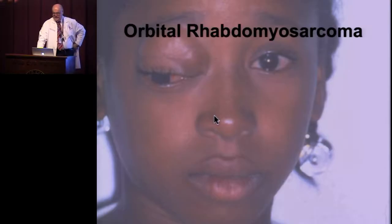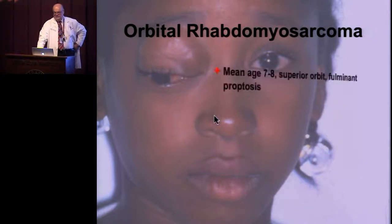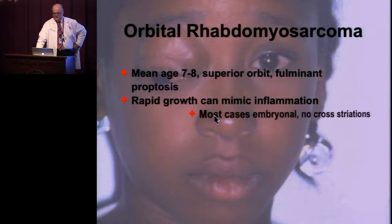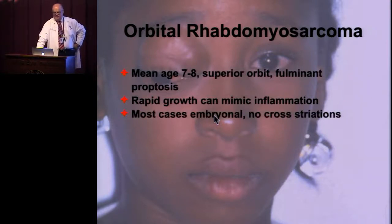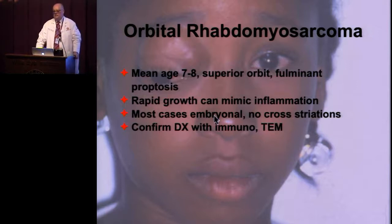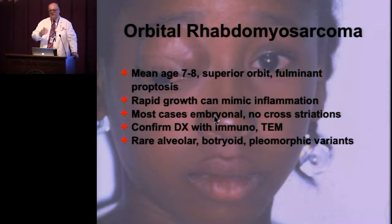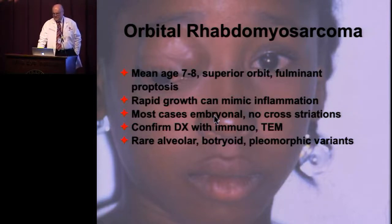Rhabdomyosarcoma is a lesion you should always think about in any child with orbital disease. Average age is 7 or 8. Rapid growth can mimic inflammation. Most cases are embryonal rhabdomyosarcoma and most don't have cross-striations — the diagnosis is made by demonstrating muscle differentiation with immunohistochemistry. There are rare alveolar forms with poor prognosis that require different therapy and special tests looking for specific gene rearrangements.